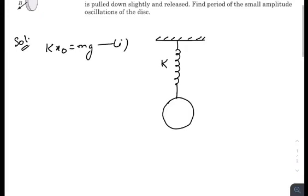So kx₀ must be equal to mg. This is the equation for equilibrium condition. And it's given that there's a constant magnetic field B acting parallel to the plane of the disk.